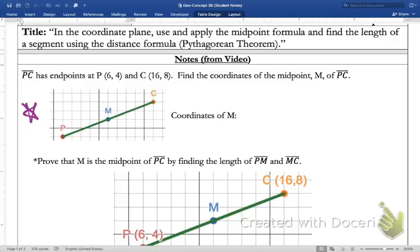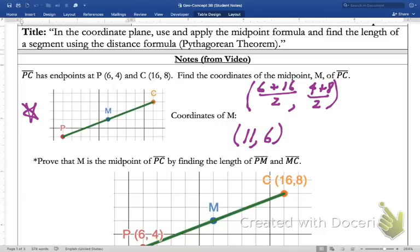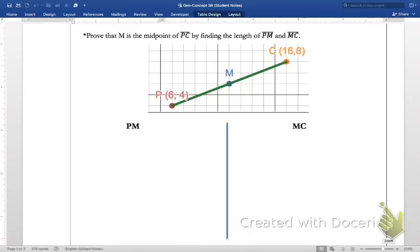So think about what that's going to be. This is how we would do it again. We're going to add our x-coordinates, divide by 2, and we're going to add the y-coordinates, divide by 2. So the coordinates of the midpoint look to be 11,6. Now what I want to do is take that 11,6, the coordinates of that midpoint right there, and move it on down to this next diagram.